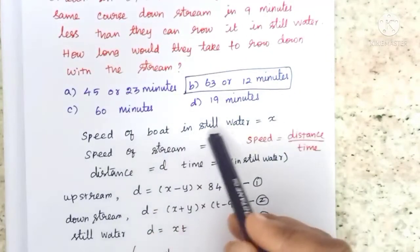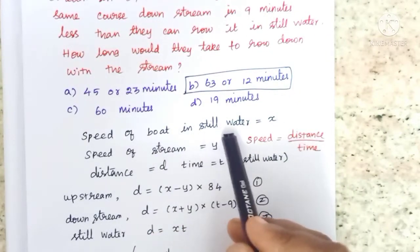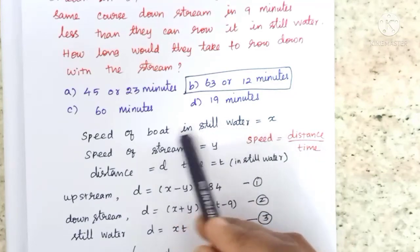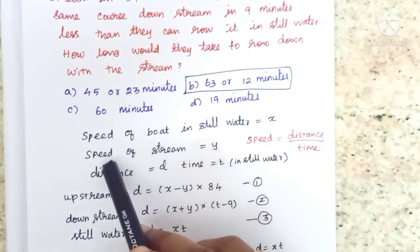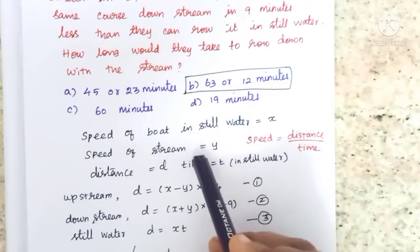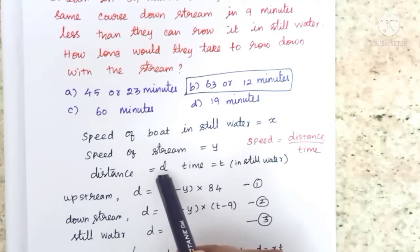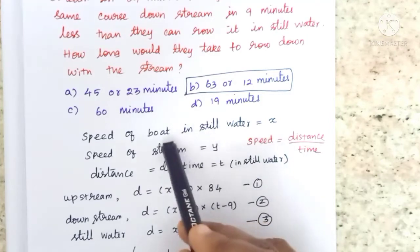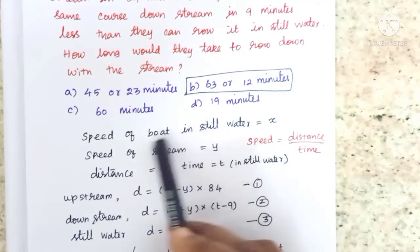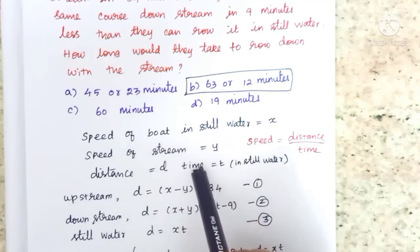Let the speed of the boat in still water be x and the speed of the stream be y. The distance is the same distance d. In still water, we can express distance as speed times time, so distance equals speed into time.